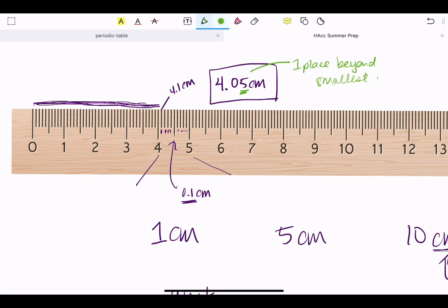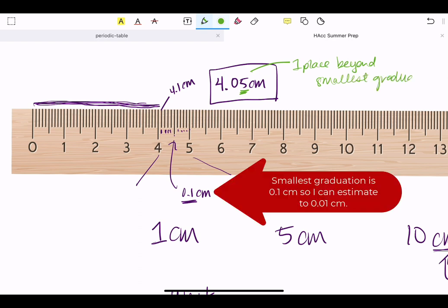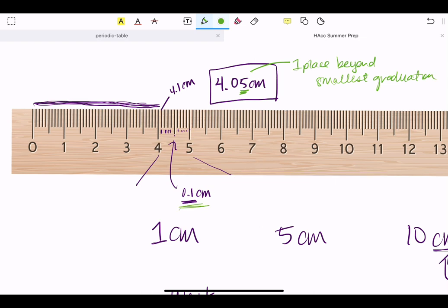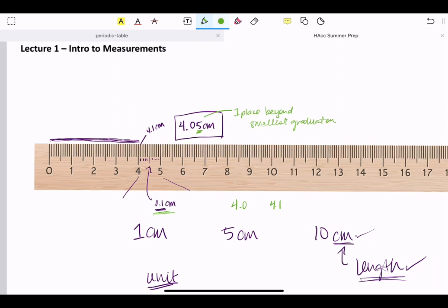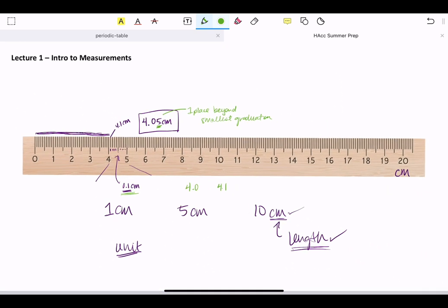I have estimated one place beyond the smallest graduation, where my smallest graduation is one-tenth of a centimeter. Based on the ruler, based on the markings, I know that measurement is between 4.0 and 4.1. So I can estimate one place beyond that. I can estimate to the hundredths place based on the lines that are present. And again, none of those have meaning without units. 4.0, 4.1, 4.05 have no meaning unless I have centimeter next to it.